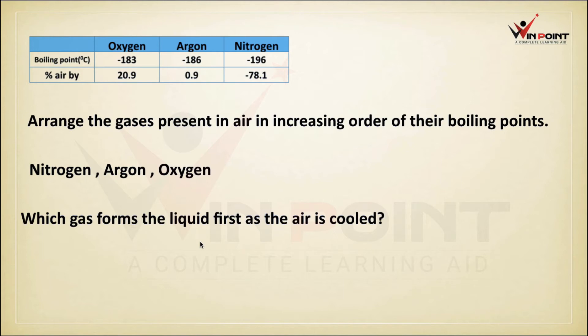Which gas forms liquid first as air is cooled? As we decrease the temperature from room temperature downward, we reach −183°C before −196°C. So oxygen reaches its boiling point first and converts to liquid first.